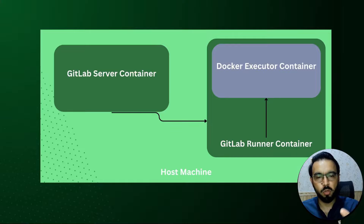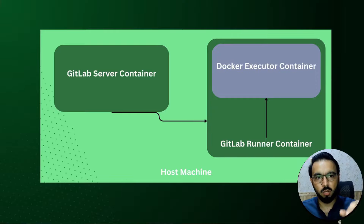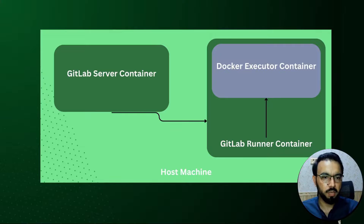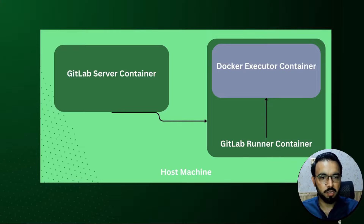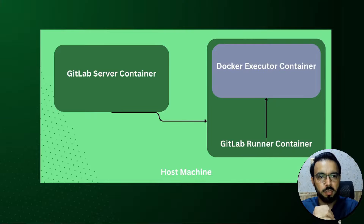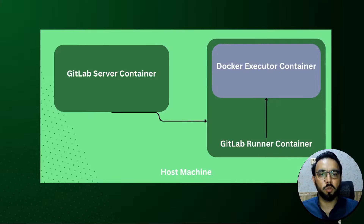Every time we run a build pipeline, the Docker executor takes that pipeline, clones the repository inside itself, and runs the pipeline. After the pipeline runs successfully, that Docker executor container is shut down. Whenever there is a new pipeline in the queue, the Docker executor comes up again and starts picking up those pipelines.